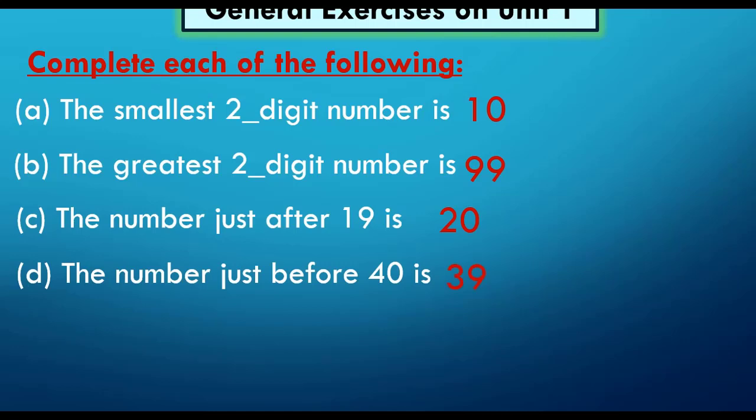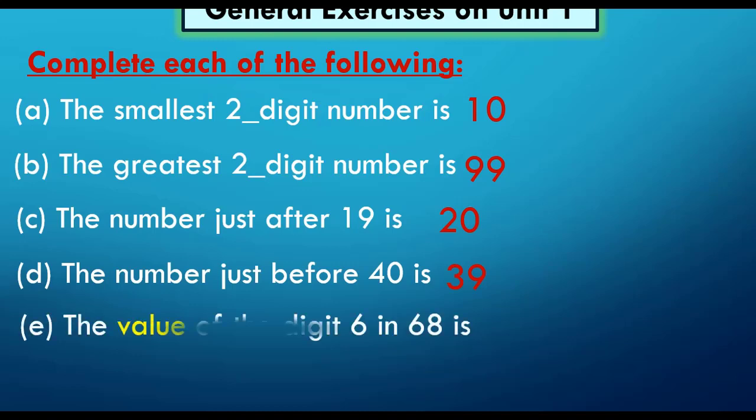Thirty-nine. Now there is an important point to focus on: the lesson on place value. Since today we are talking about general exercises on Unit 1, let's review: 'value' means the value of the number in digits. If the number is in the units place, its value stays as-is. If it's in the tens place, I add a zero in the units place and write the digit in the tens position.